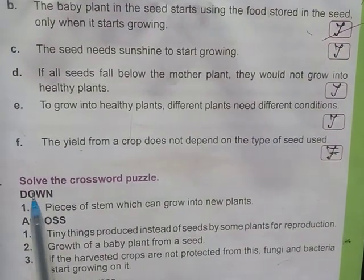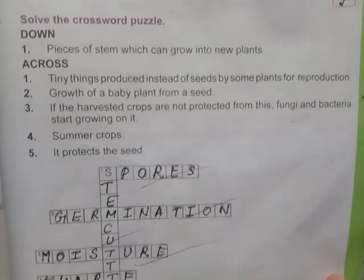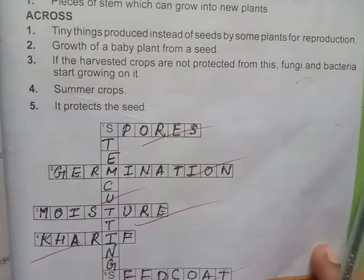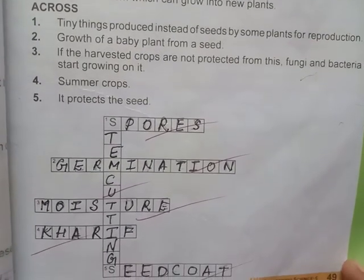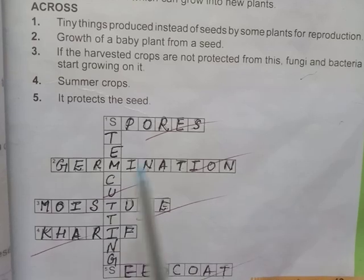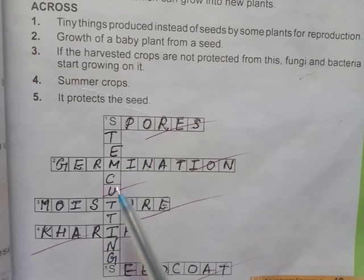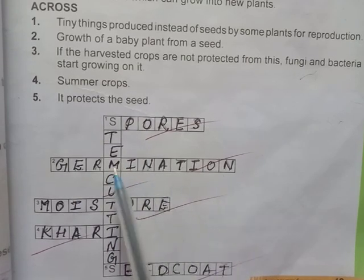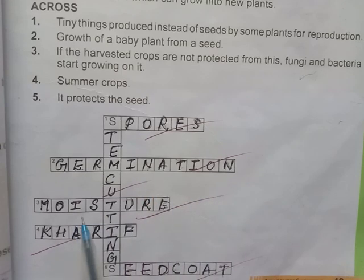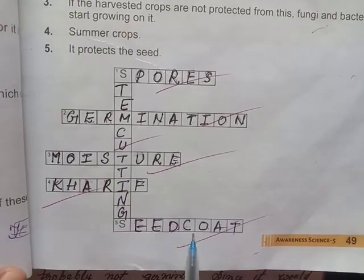Three: Solve the crossword puzzle. The answers are: spores, stem cutting, germination, moisture, kharif, seed coat. You can solve this question by looking at the crossword.